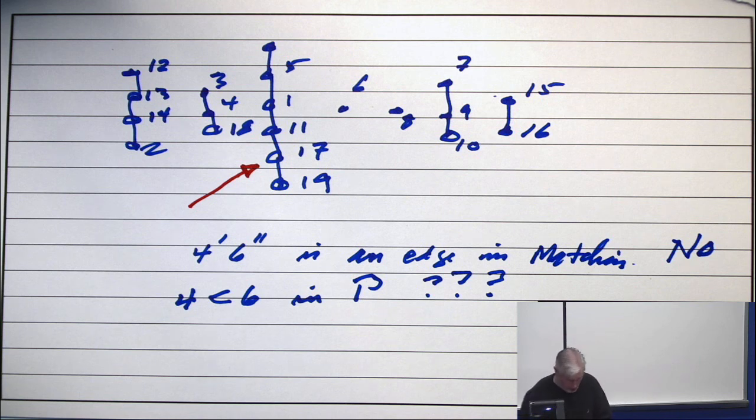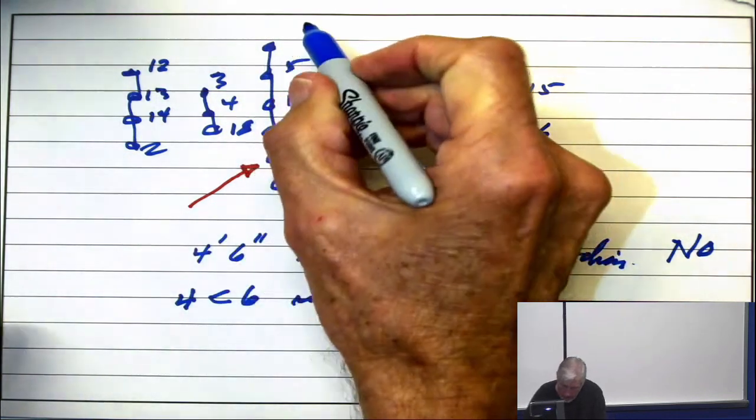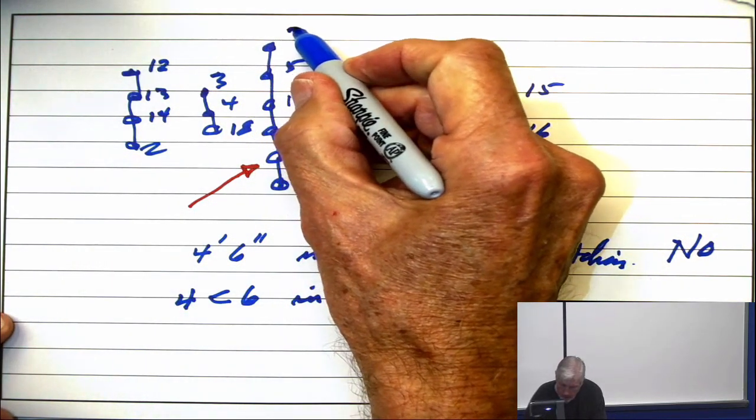I see in my picture, I didn't label all the vertices, did I? I didn't put a label on this one, it's 20.